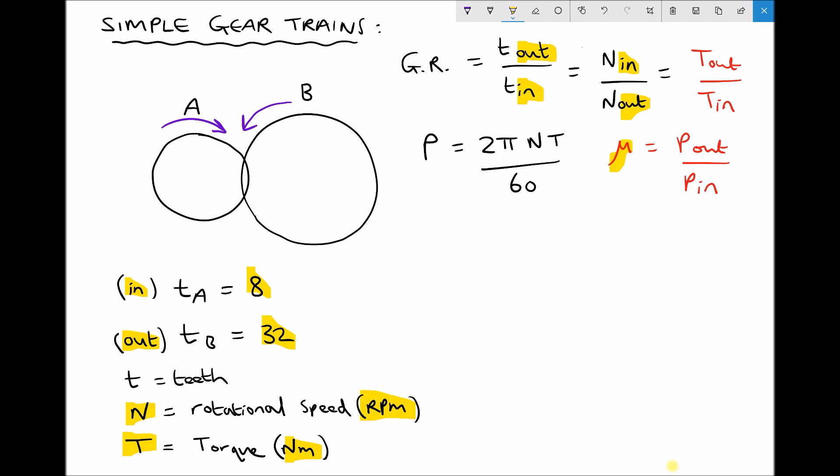The way that we calculate power for a rotating shaft is P equals 2π times the rotational speed times the torque divided by 60. So here we have a formula for the power and we can use that formula to calculate the power of the input shaft, the power of the output shaft, or the efficiency depending on the information that's given.